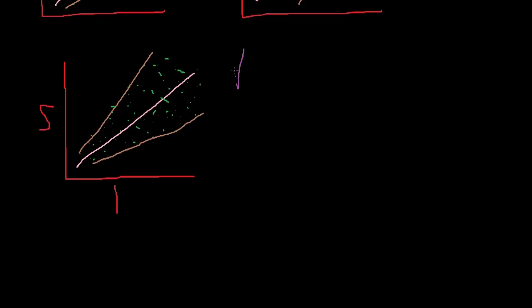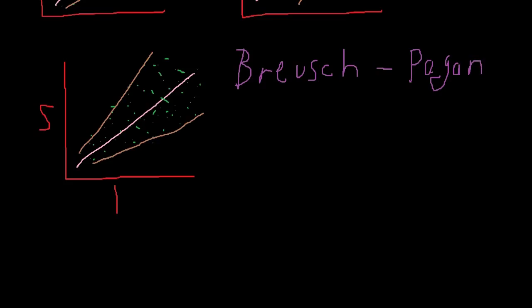A common test to check for heteroscedasticity is the so-called Breusch-Pagan test. Credit goes to Mr. Breusch and his partner Pagan for this great statistical test. The test gives you back a p-value, so you can decide whether there is heteroscedasticity or not. If the p-value is small enough to reject the null hypothesis of homoscedasticity, you should compute robust standard errors.